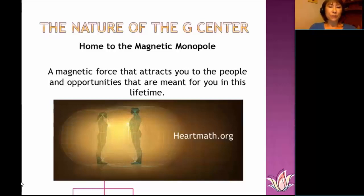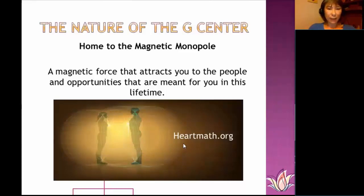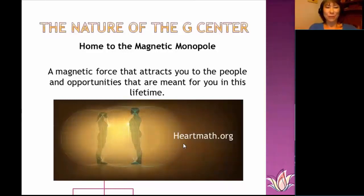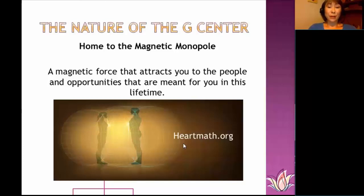If you're not familiar with the magnetic quality of the G Center, you can do some reading at the Institute of HeartMath at heartmath.org, where they've done research around the magnetic quality of the heart. This is not Human Design — HeartMath has nothing to do with Human Design. They're looking at it from a scientific aspect, while we're looking at it on the body graph from an esoteric aspect. But there is science that backs up the transmission that Human Design founder Ra Uru Hu received — that the G Center has a magnetic resonance attractive to our direction and to love in our life.